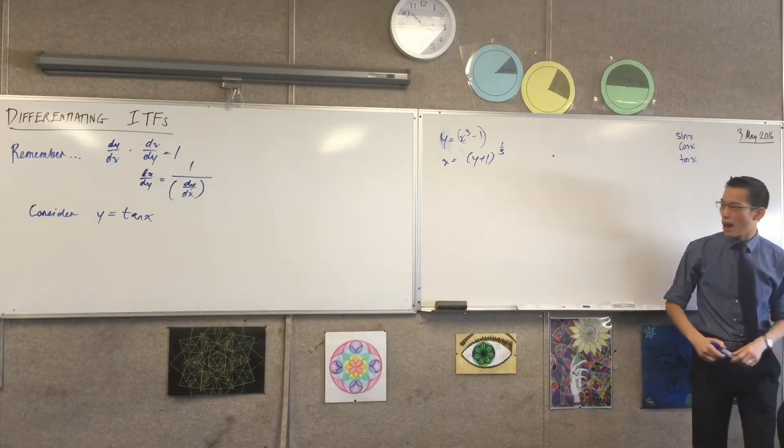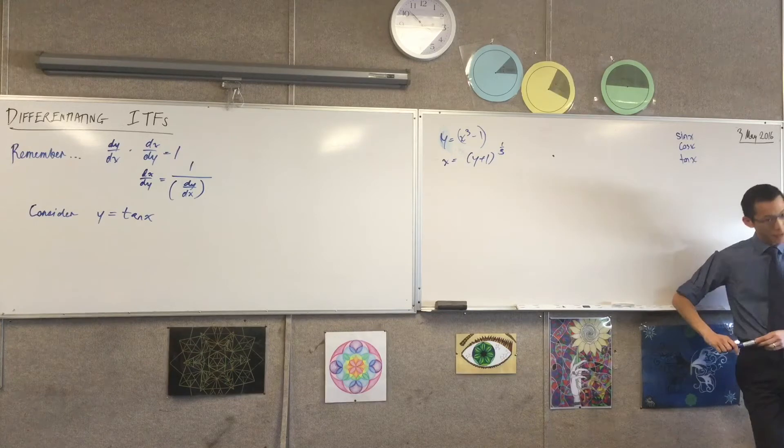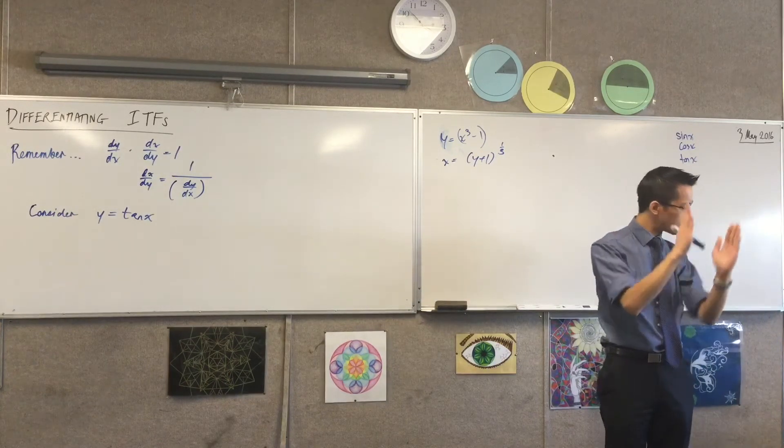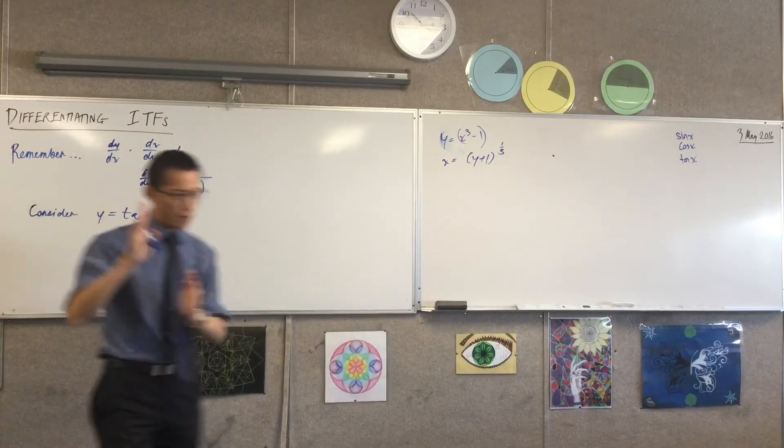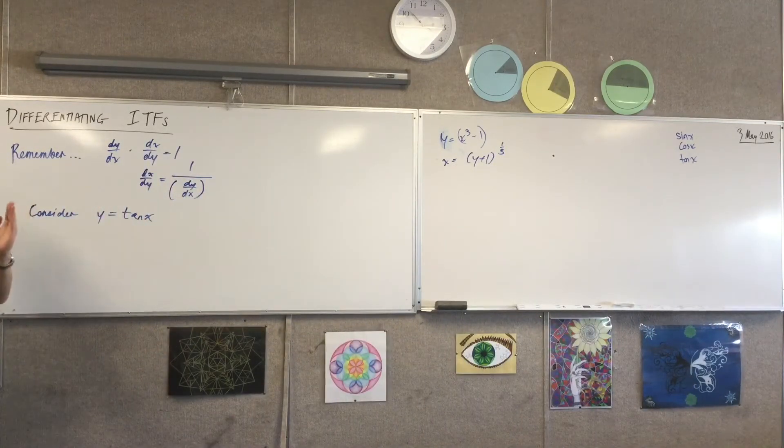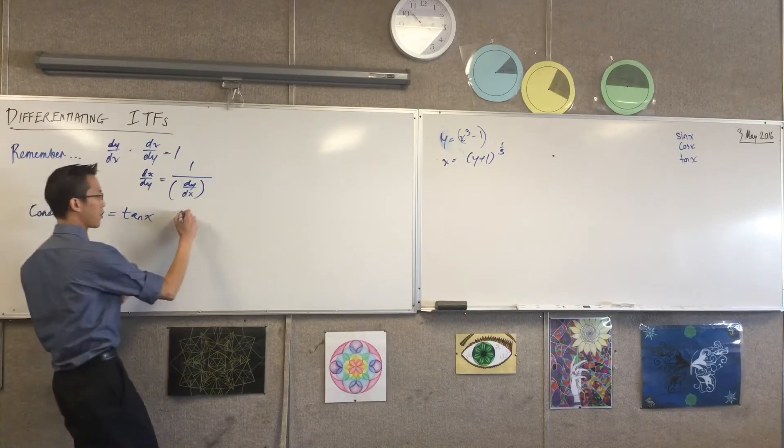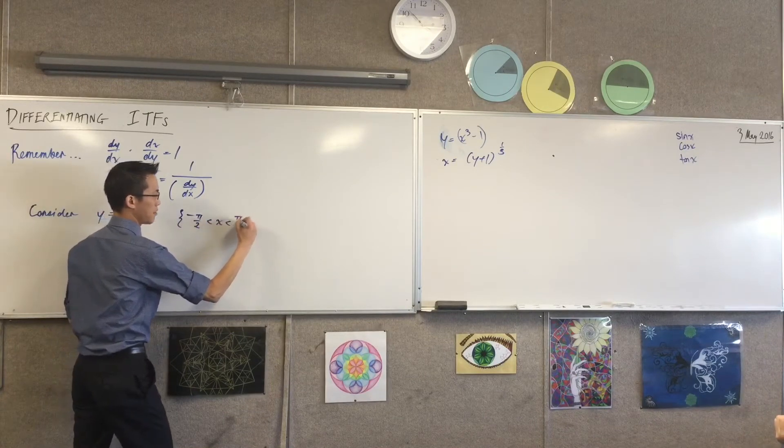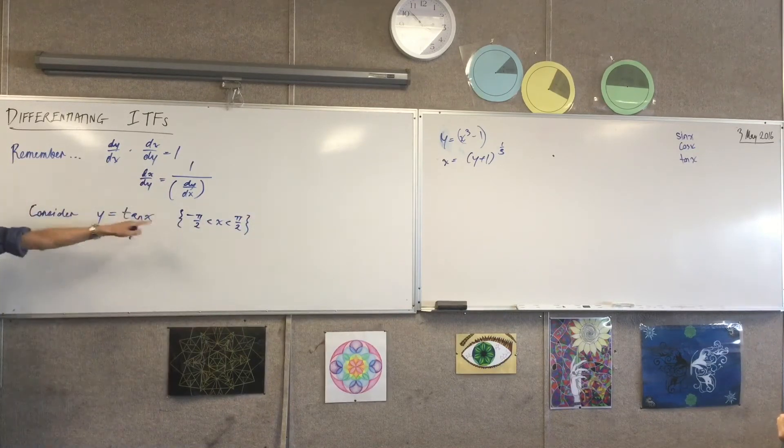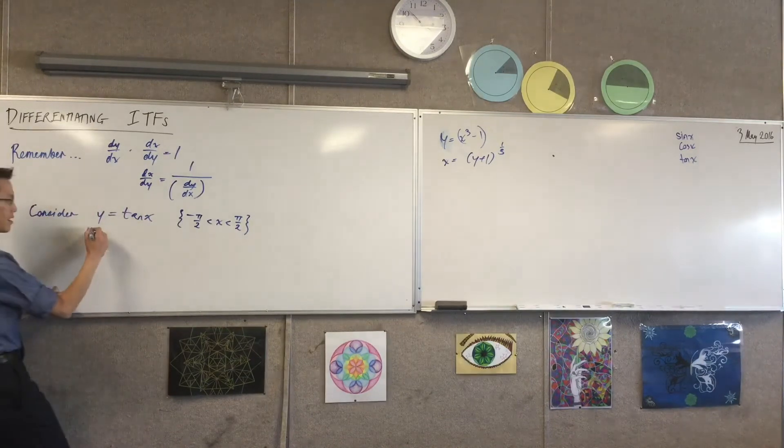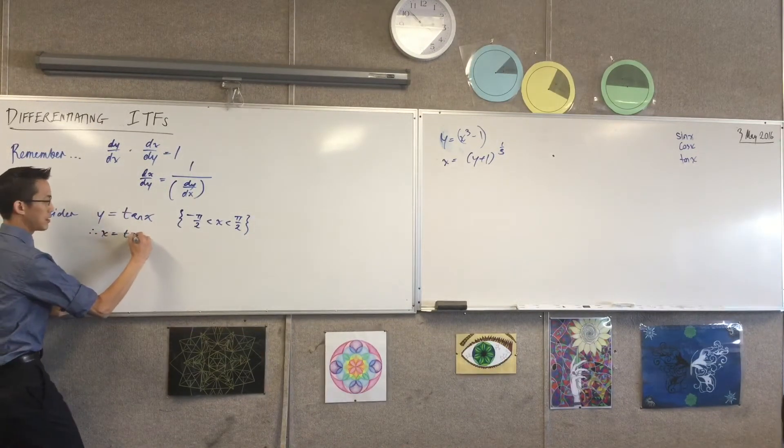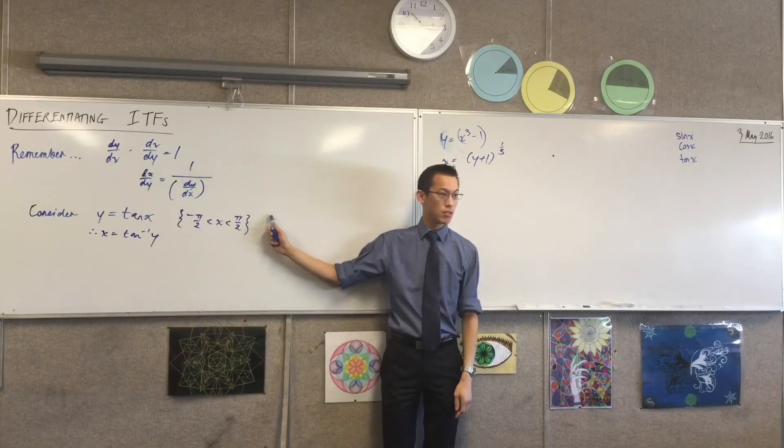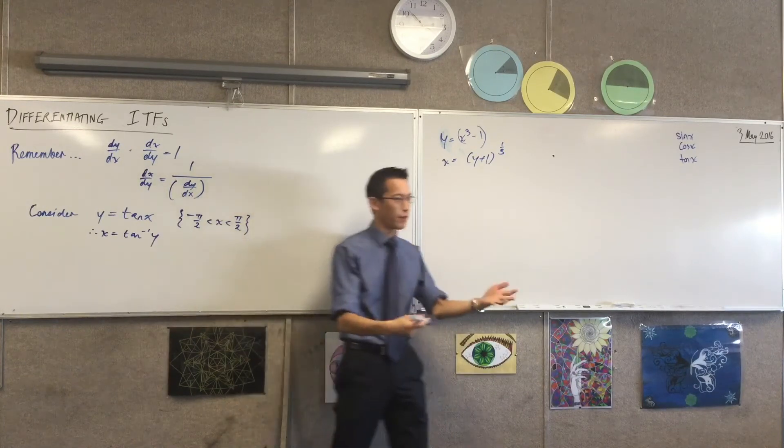Now, in order to get our inverse function, Y equals tan X rather dramatically fails the horizontal line test, so we restricted the domain. Where do we restrict it again? Where do we want it to? Yeah, we want it from negative π/2 to π/2, and we do not want the boundaries, right? So I'm going to place that restriction in there. Okay, now, knowing that, I can now say, therefore, X is equal to tan inverse of Y. Does that make sense? Only having made this domain restriction, I can now say this, because this doesn't exist everywhere, as we've pointed out.